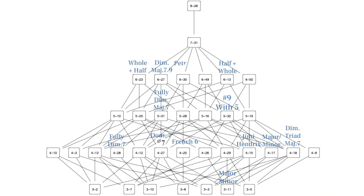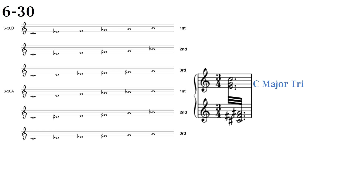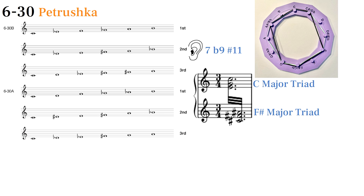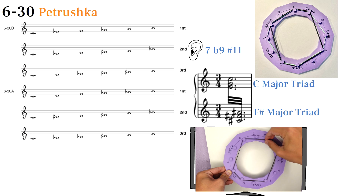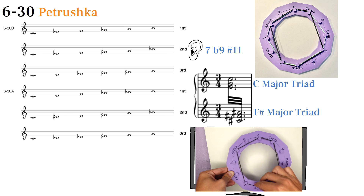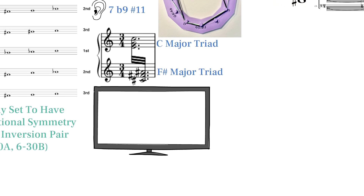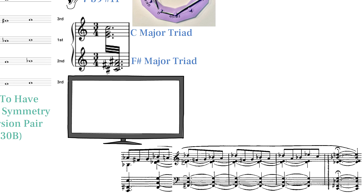6Z23 is a special set nicknamed the Petrushka chord from Stravinsky's ballet. We might think of it as having a C and F-sharp major triad played together, or as a 7 chord with a flat 9 and a sharp 11. It's very symmetrical, like the full octatonic scale with a tritone removed from it. It's oddly the only set in 12-tone equal temperament to have transpositional symmetry, meaning it maps onto itself when transposed by a tritone, and yet it has a unique inversion pair. Its symmetry can make it hard to implement as it's quite dissonant, but Scriabin uses it as the final chord in Op. 67 No. 1.